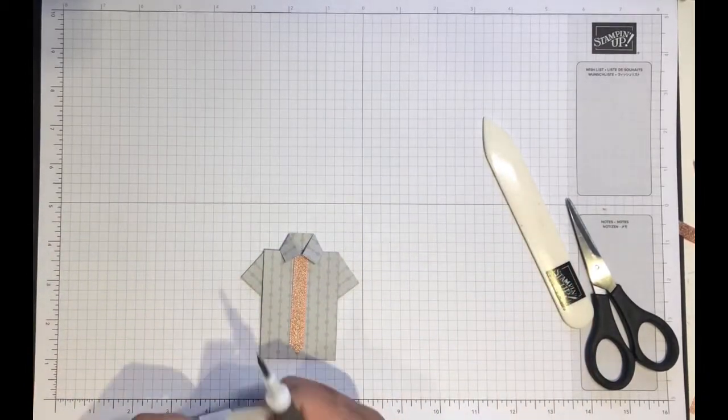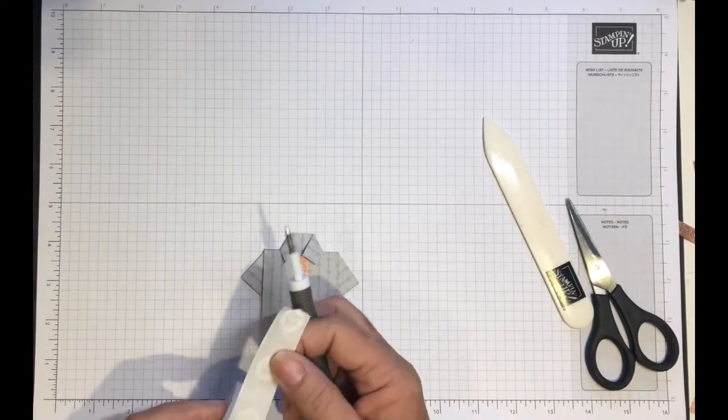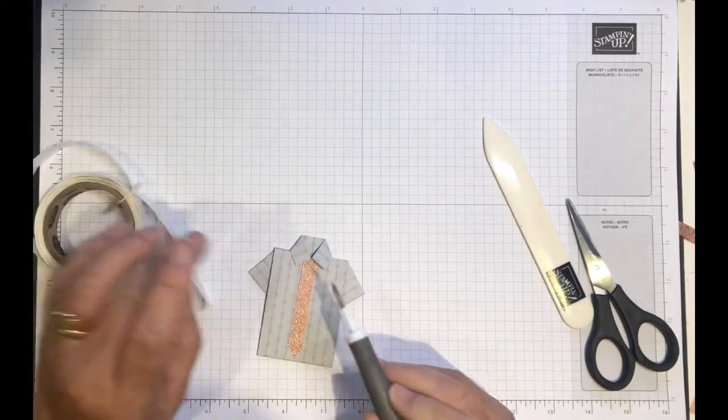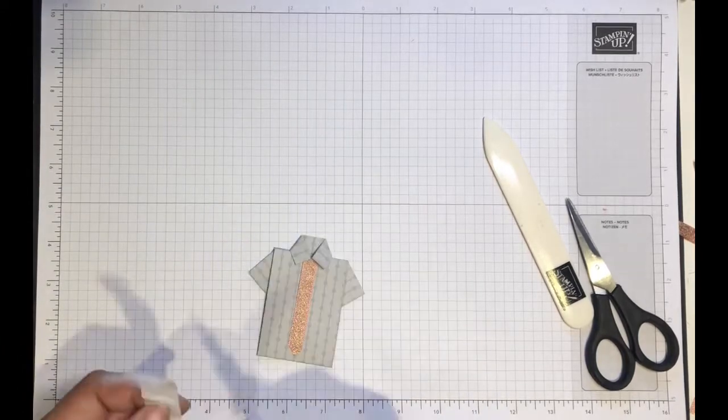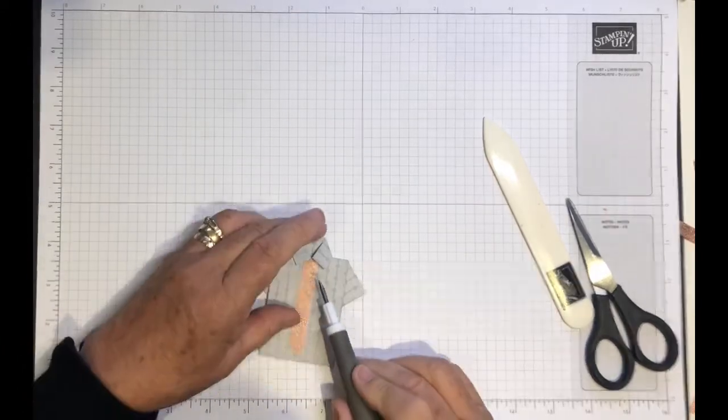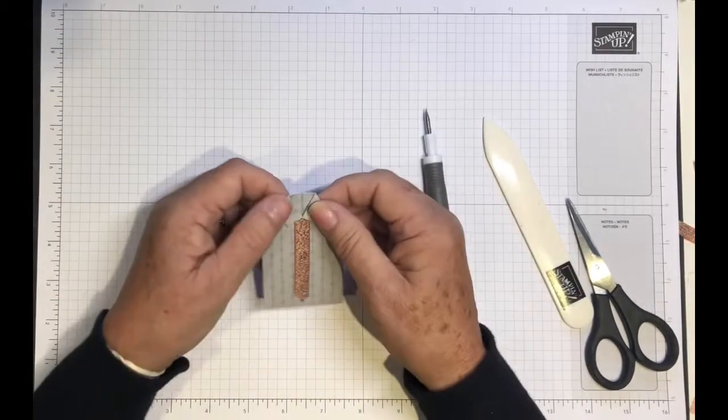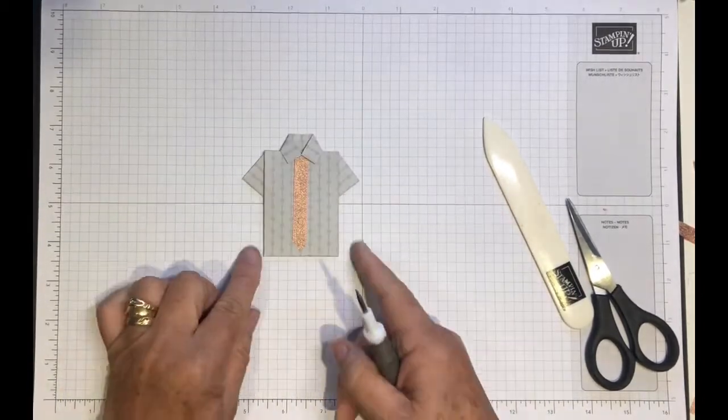And then a glue dot on either side of the shirt collar. I'm just pressing ever so lightly, I don't want it really flat on the shirt, so just give it a light press and there we are.